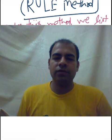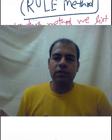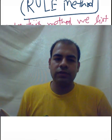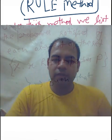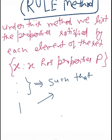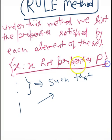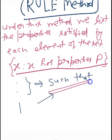Now let's look at the rule method or set builder form. Going by the name, we write the rule that is satisfied by all the elements of the set. Under this method, we list the properties satisfied by each element. It is written as: {x : x has the property P}, where the colon means 'such that' in mathematical language.